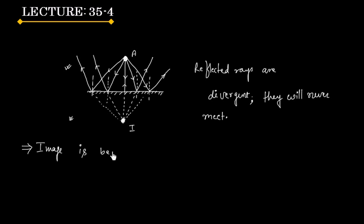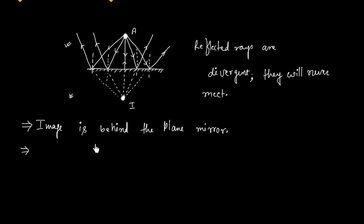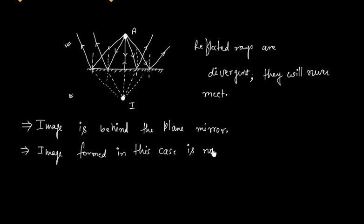So the first important point: the image is behind the plane mirror. Now this is not a real image, because this image is formed by extending the reflected rays backward. So this is not a real image — this is a virtual image. The image formed in this case is not real; it is basically virtual.